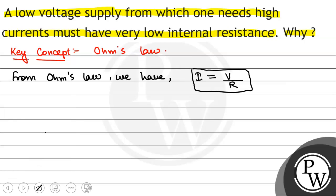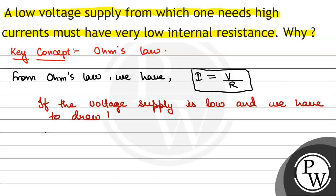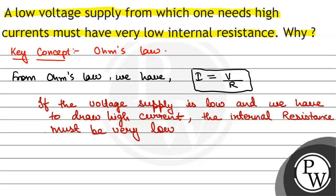Now, we have told that voltage supply is low and current is high. So, if the voltage supply is low and we have to draw high current, the internal resistance must be very low as current drawn is inversely proportional to resistance.